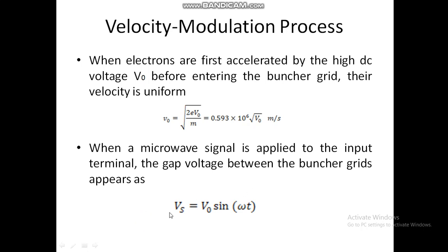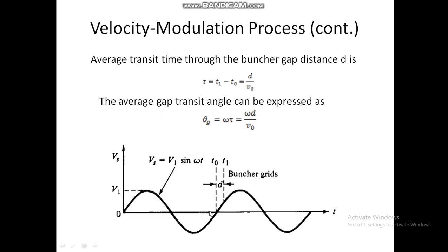When a microwave signal is applied to the input terminal, the gap voltage between the buncher grids appears as Vs = V₁ sin(ωt), where V₁ is the amplitude of the signal and V₁ should be much less than V₀. The average transit time can be calculated by τ = d/v₀, and the average gap transit angle is given by θg = ωτ.